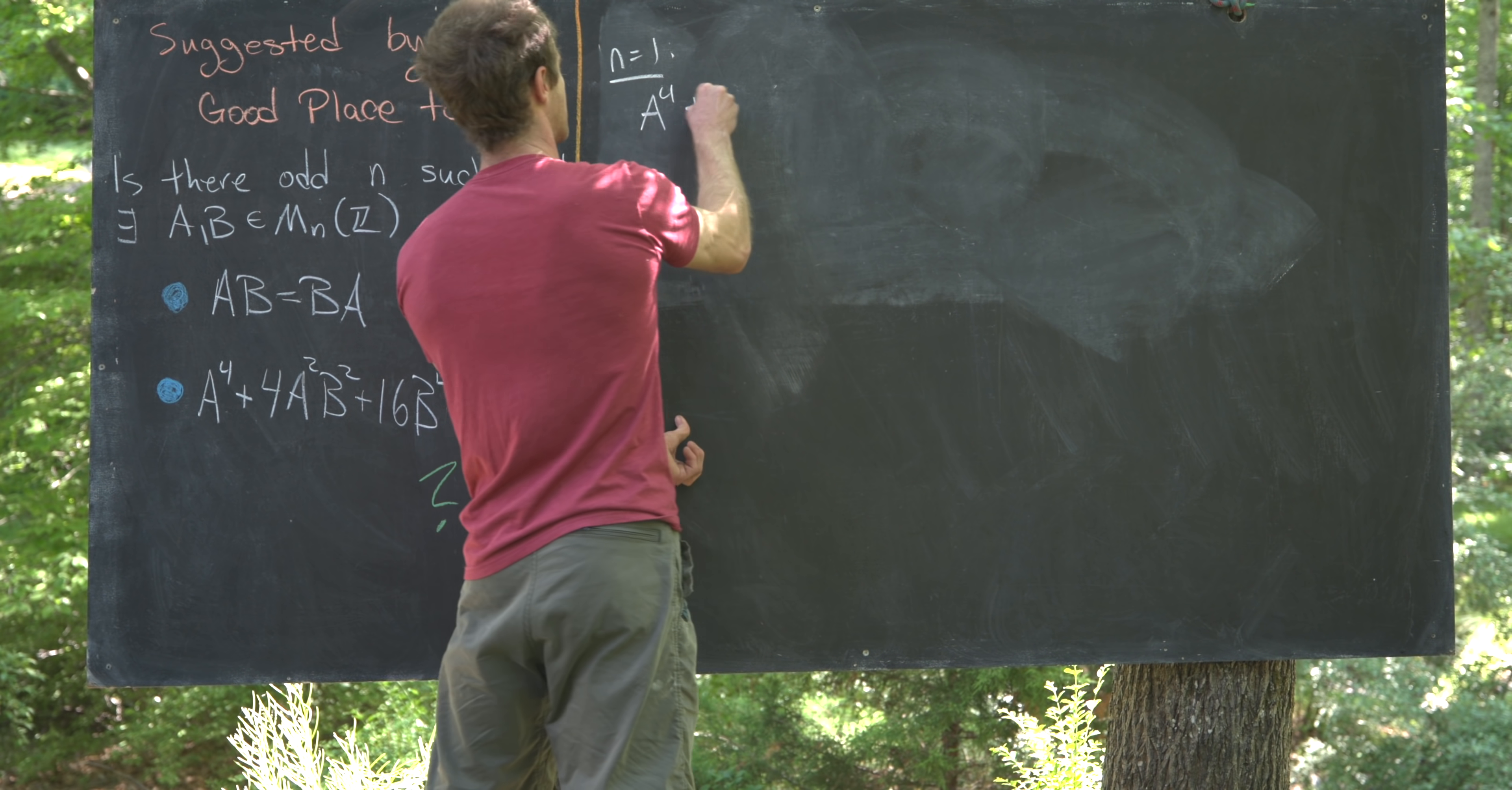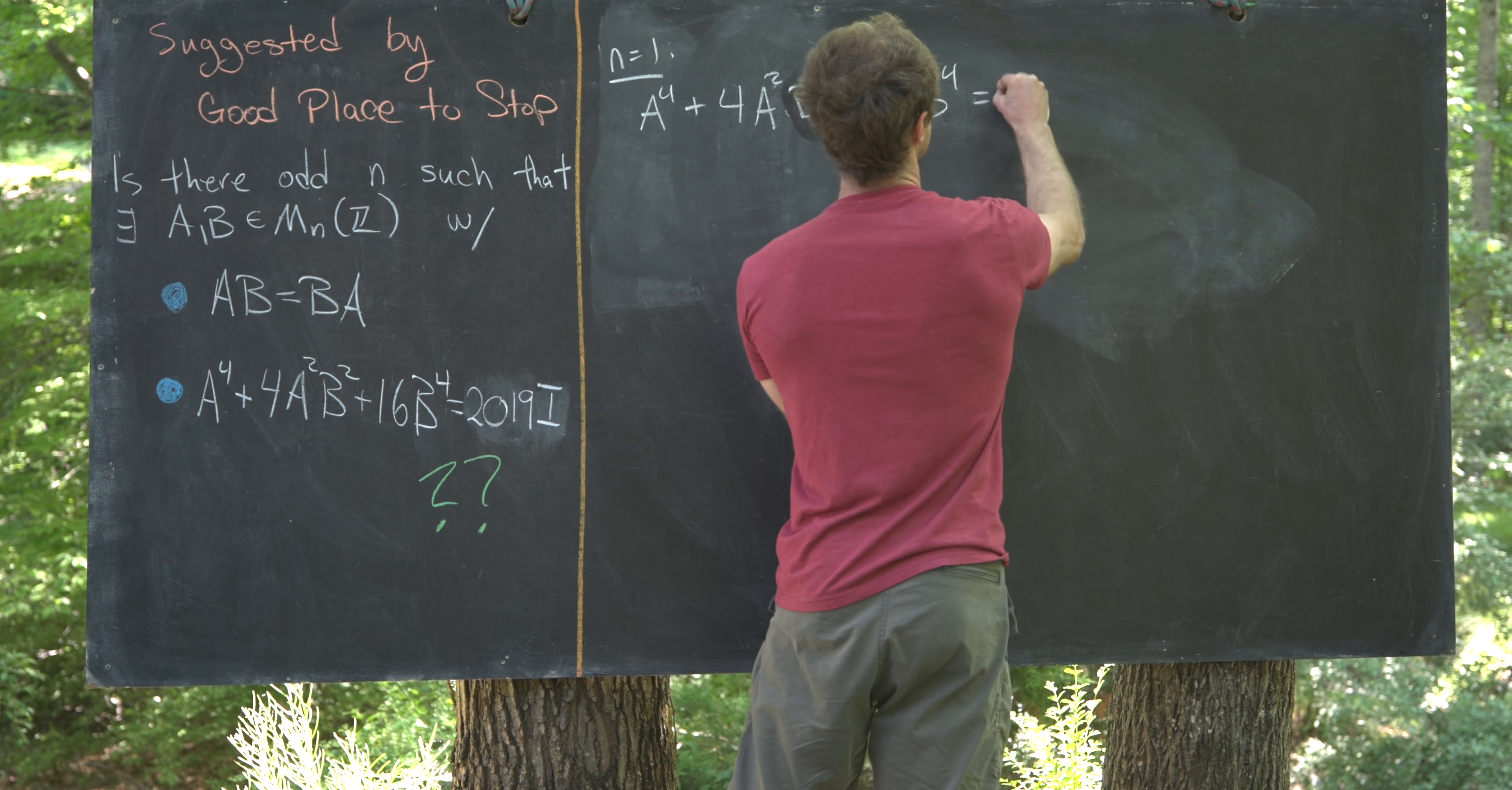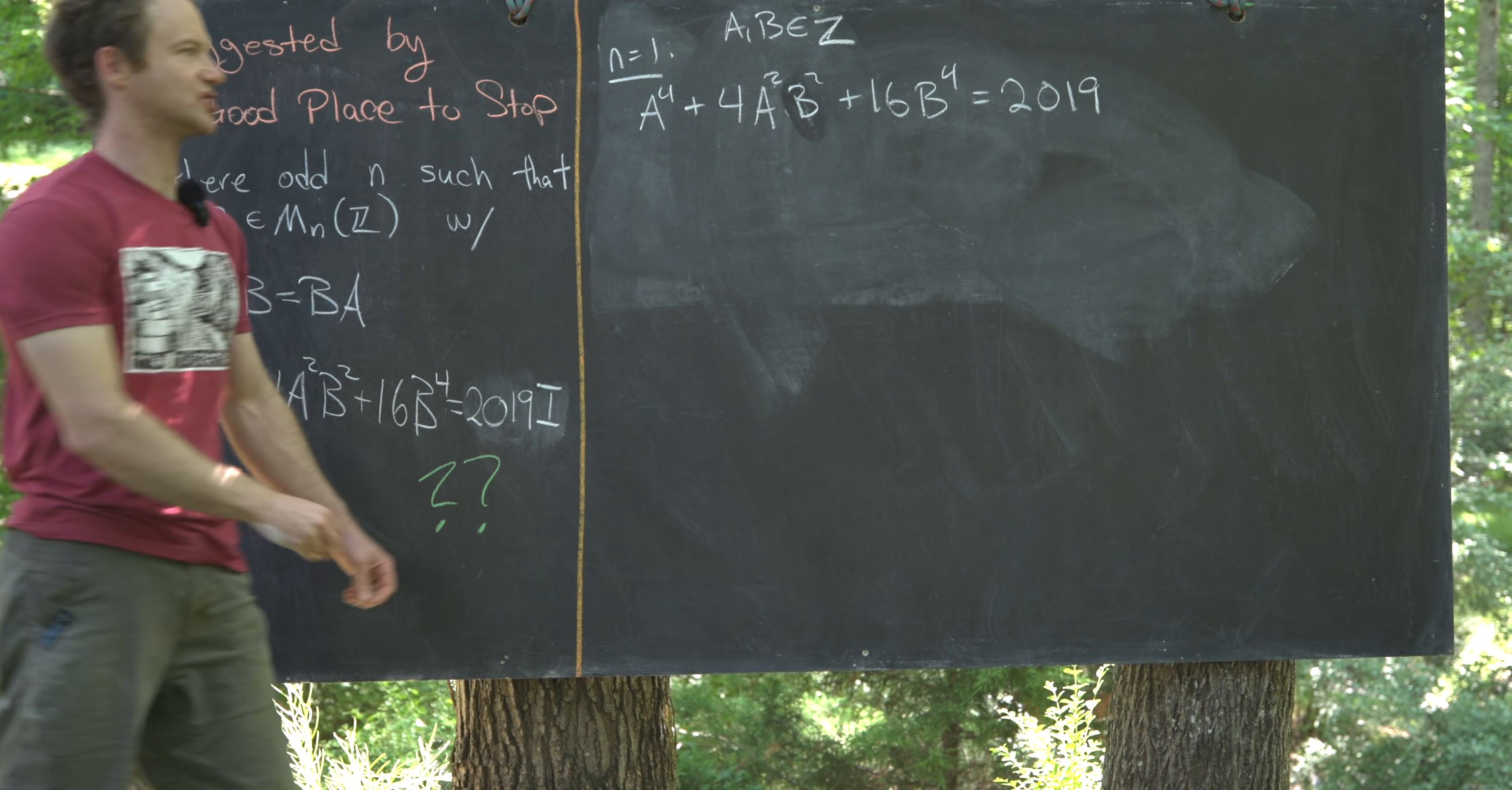So that's going to be a to the fourth plus 4a squared b squared plus 16b to the fourth equals 2019 times the 1 by 1 identity matrix, but that's just the number. So let's reiterate the fact that here a and b are just integers, so they're just numbers.